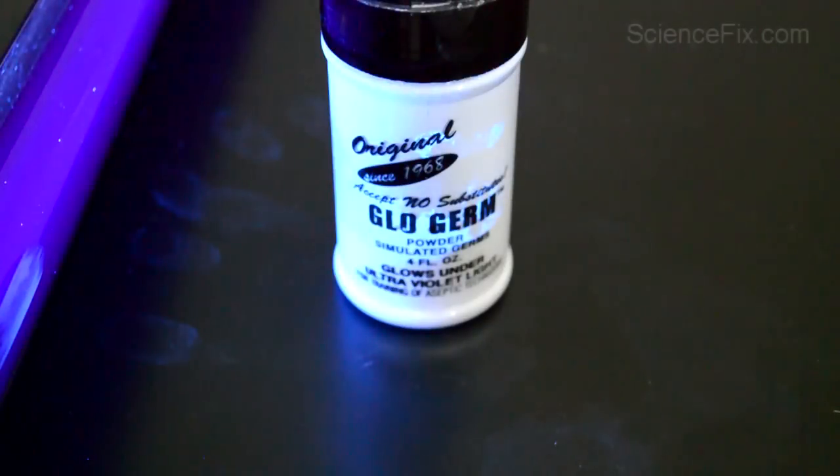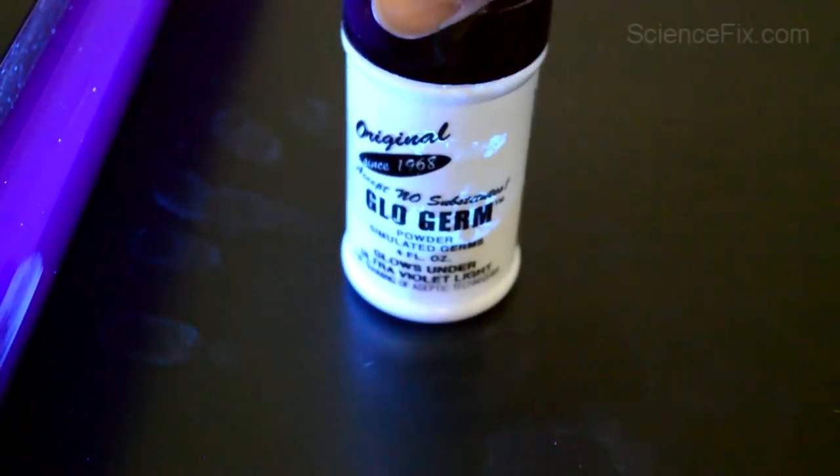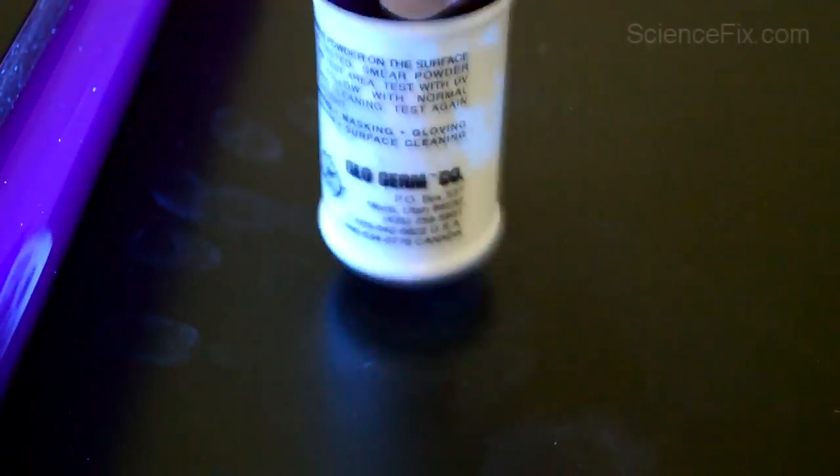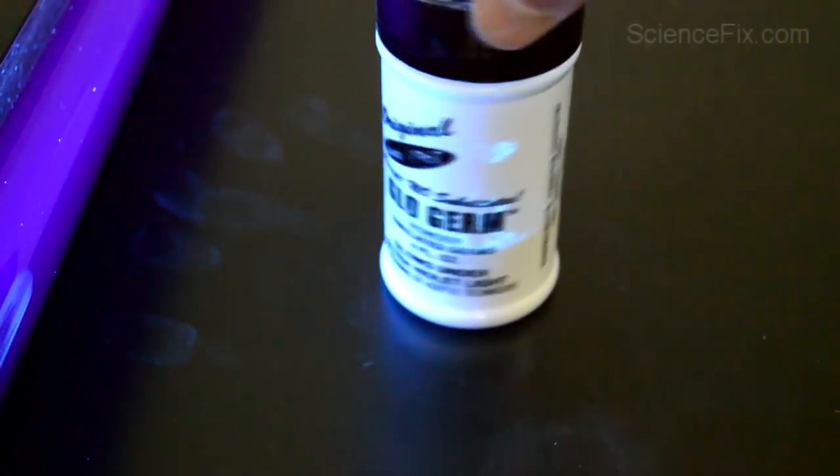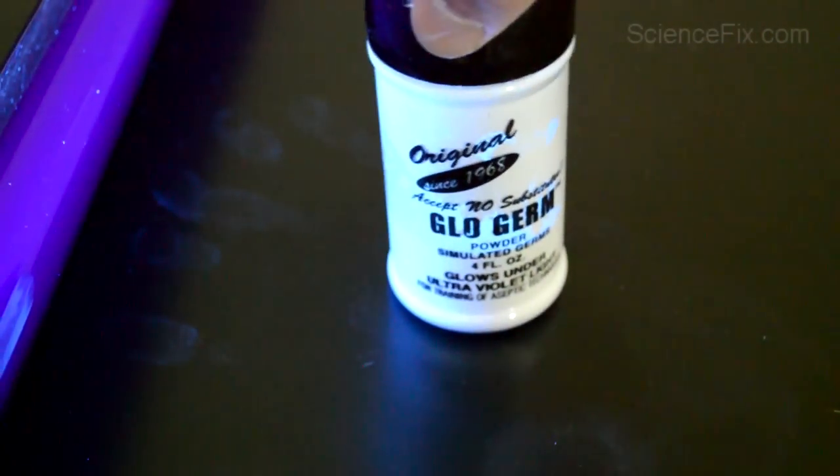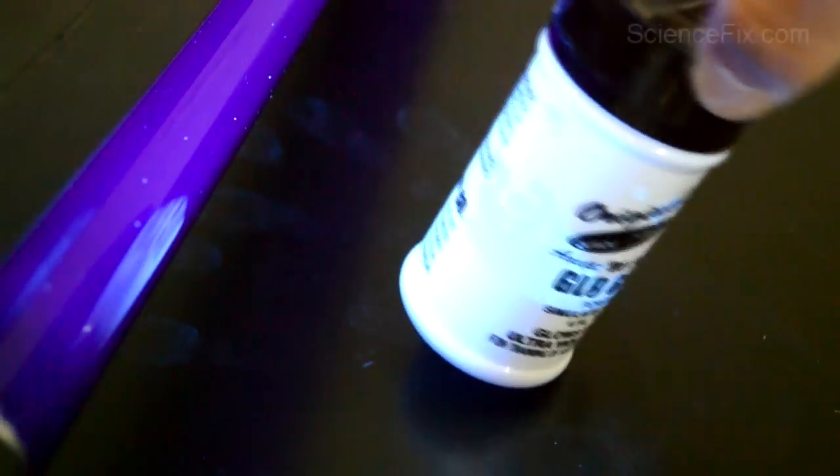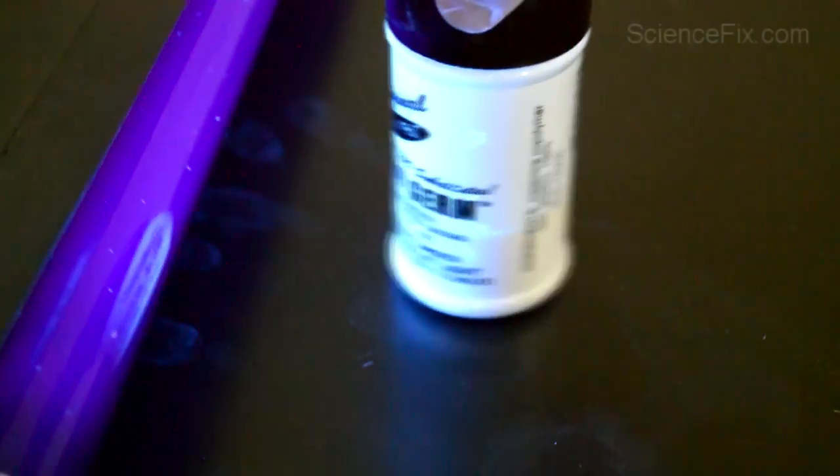It will fluoresce pretty easily. You can see some fingerprints actually on the countertop there. That's some of the glow germ powder that's been on some fingers, so you can see the fingerprints on the countertop. I'll open up the container and pour out some of the glow germ powder. You can see what it looks like.